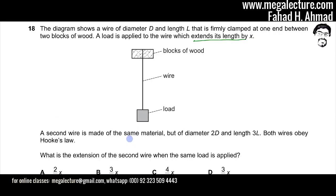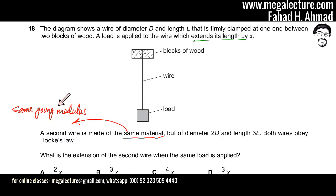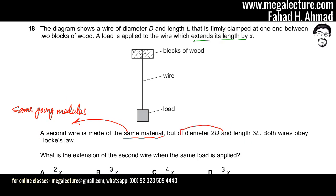Since the second wire is made from the same material, it will have the same Young's modulus as the first wire. We need to figure out what the extension of the second wire is when the same load is applied. To do this, we'll find the Young's modulus from the first experiment and then apply it to the second.